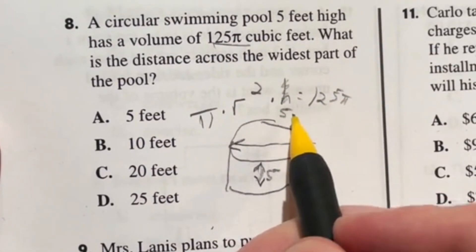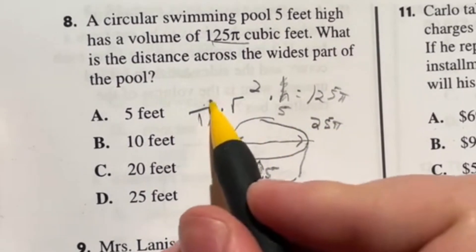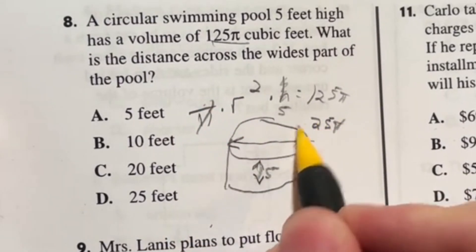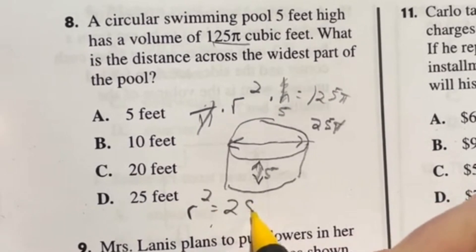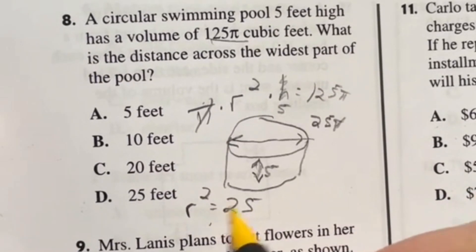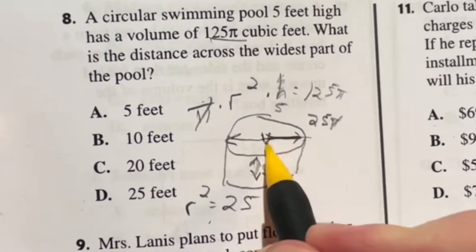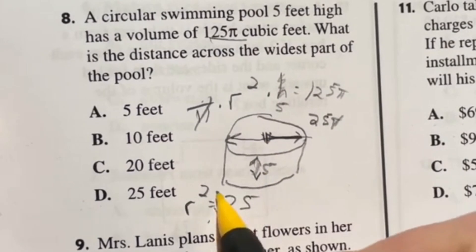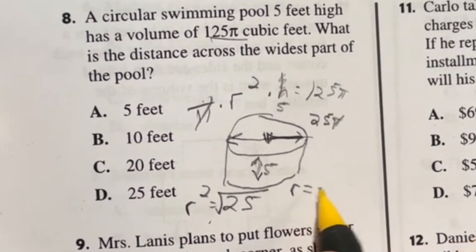So 125 divided by five just gives us 25 and we still have that π. But here's the deal, that π is going to cancel out with this π. So really we're saying here that the radius squared is equal to 25. So really we just got to take the square root of both sides and we'll at least get our radius, which is half of this length. So what's the square root of 25? Well, 5 times 5 gives you 25, so the radius here is equal to 5.